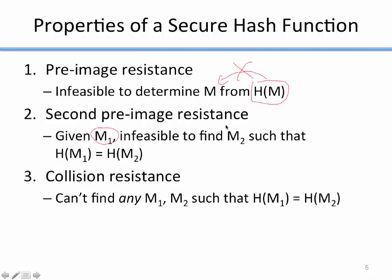The third property is collision resistance: I can't find any m1 and m2 such that h(m1) equals h(m2) — I can't find any two messages with the same hash. People often ask what's the difference between second pre-image resistance and collision resistance. In second pre-image resistance I'm given a specific m1 and need to find another message with the same hash. In collision resistance I just need to find any two messages with the same hash. So collision resistance is easier to break than second pre-image resistance, and we'll see a mathematical modeling of that later.